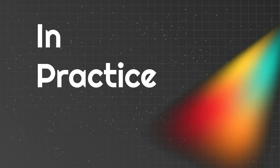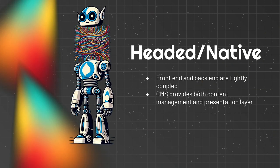So that's the terminology. Now let's take a deeper dive into what it looks like in practice when you're working with these systems — what it means for site owners and developers, and what are good use cases for each. Starting with the headed, native, or coupled example: the front end and back end are tightly coupled, the CMS provides both content management and presentation layer, and you don't need any technologies beyond the CMS you've chosen. I'll bias this toward Drupal, knowing this is a room full of Drupalers.